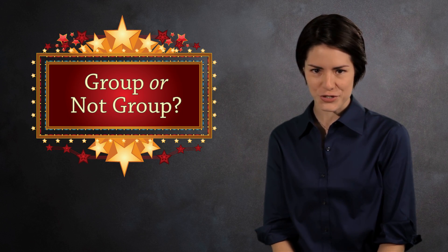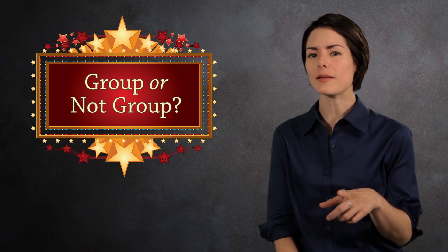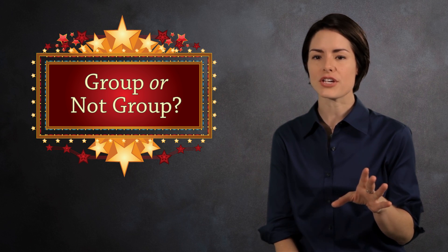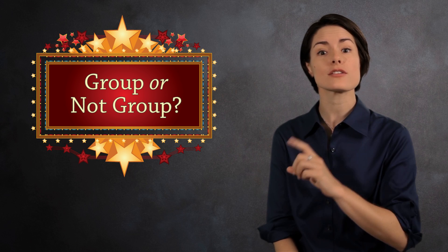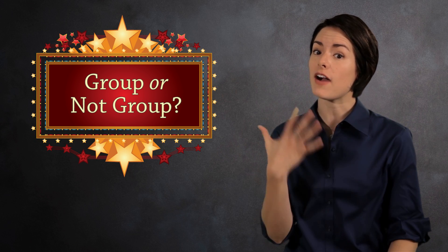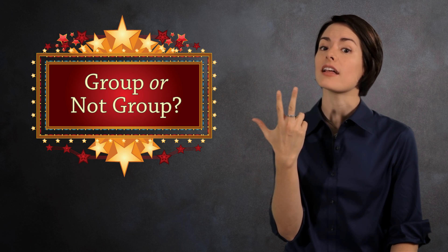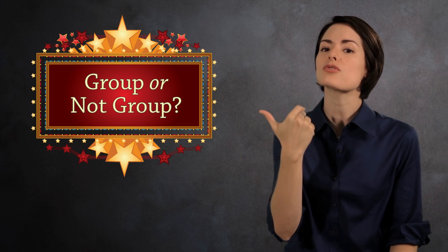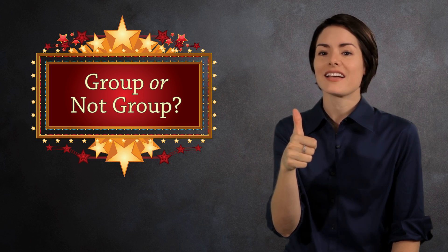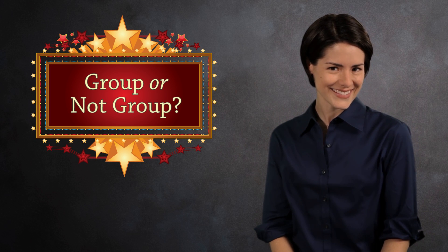Now that we know the definition of a group, let's play group or not group — the integer addition edition. For each question, I'll tell you the elements and the operation, and you have to decide if it's a group. And remember, to be a group, you need five things: a closed operation, an identity element, inverses, associativity, and a thumb. No — there's really only need for four things.